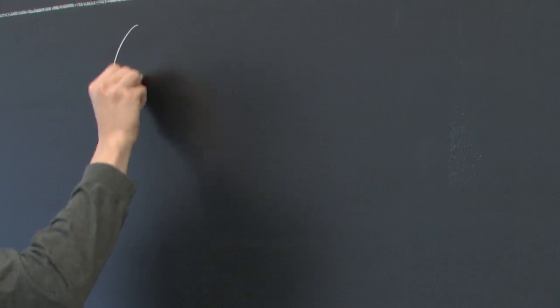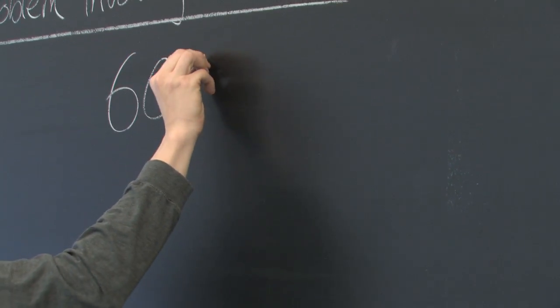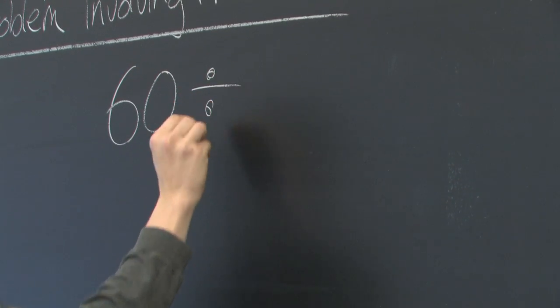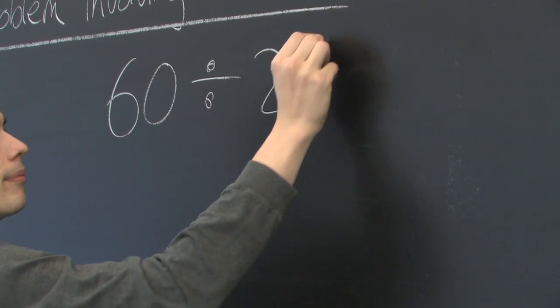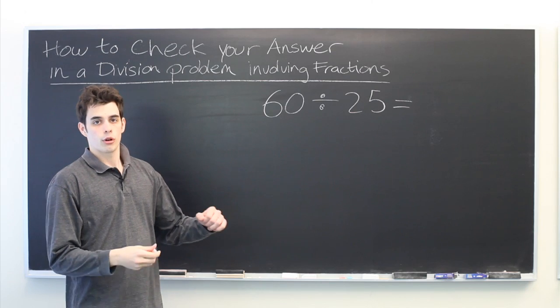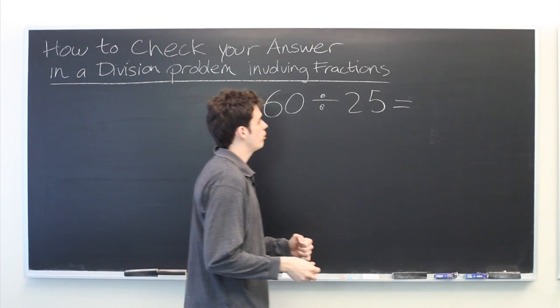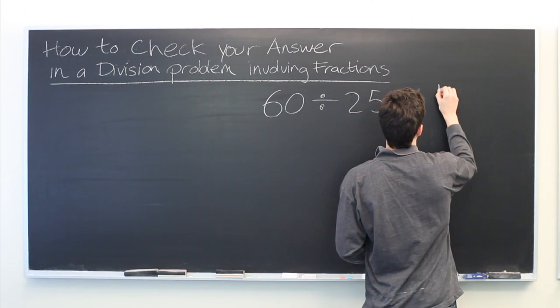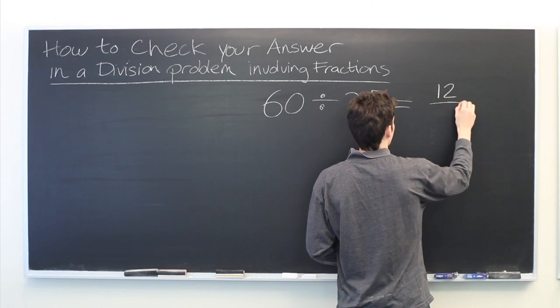So let's suppose that you're given a problem like 60 divided by 25. And then after crunching the numbers a little bit you arrive at an answer that is 12 divided by 5.